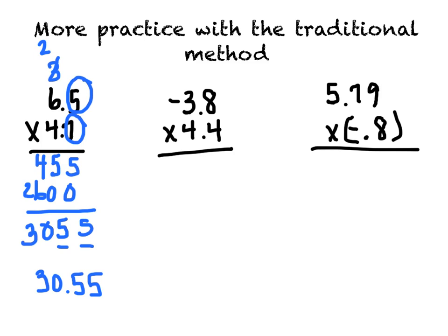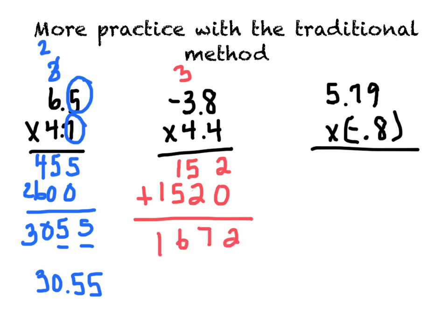Let's try the next one. This one includes a negative, so we have negative 3.8 times 4.4. We're just going to start by multiplying as if those decimals weren't there. 8 times 4 is 32, put down the 2, carry up the 3. 3 times 4 is 12, and 3 more is 15. Put down the 0. 4 times 8 is 32, and 4 times 3 is 12, and 3 more is 15. Add those quantities together. Because we were multiplying a positive times a negative, our answer is going to be negative. We have 2 numbers behind the decimal place, so we need 2 numbers behind the decimal place in our answer. So our answer is negative 16.72.